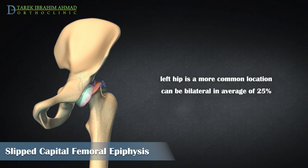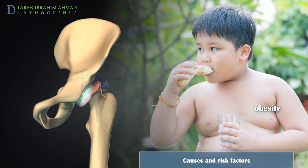In unilateral slips, SCFE may happen in contralateral normal hips within 18 months from the time of the initial episode. Typically, SCFE occurs in overweight children between 11 and 16 years old and is more common in boys than girls.